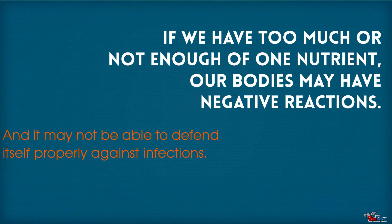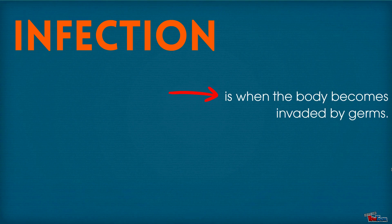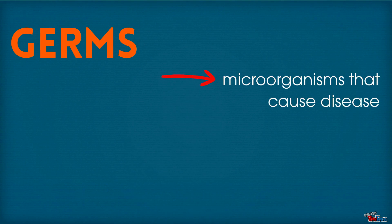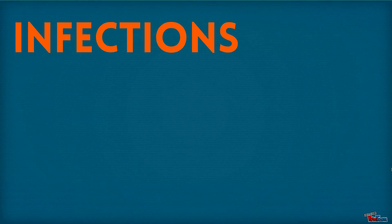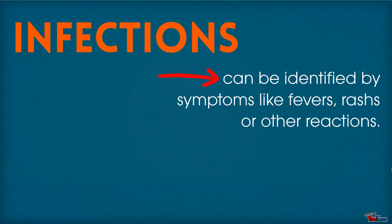If we have too much or not enough of one nutrient, our bodies may have negative reactions, and it may not be able to defend itself against infection. Infection is when the body becomes invaded by germs. Germs are microorganisms that cause disease. Infections can be identified by symptoms like fevers, rashes, and other reactions.